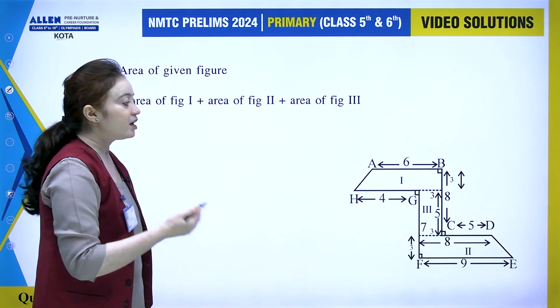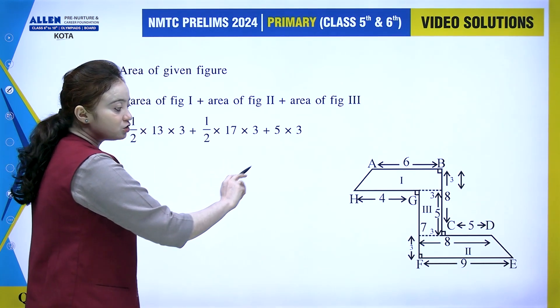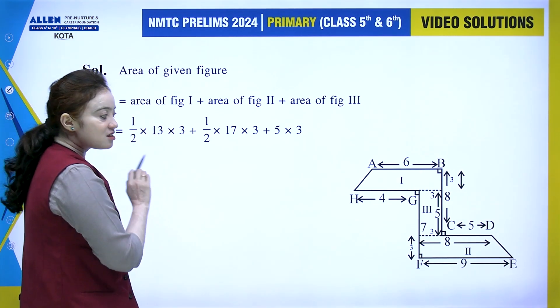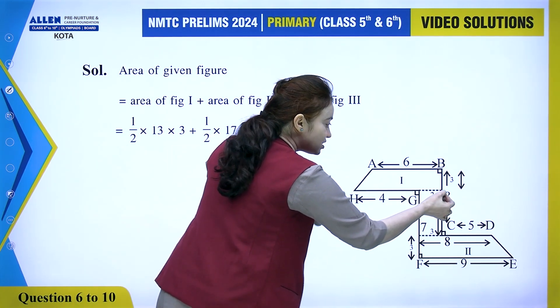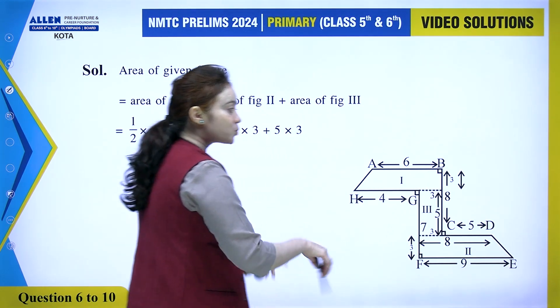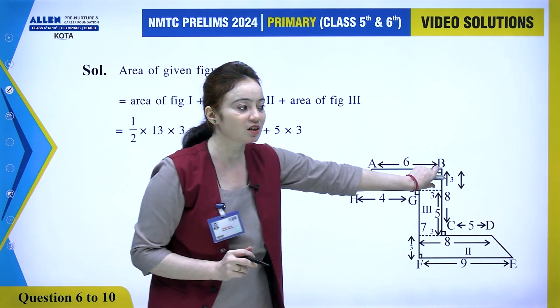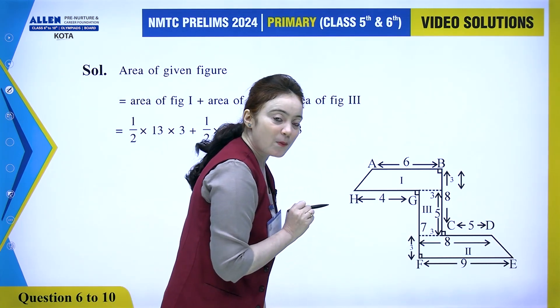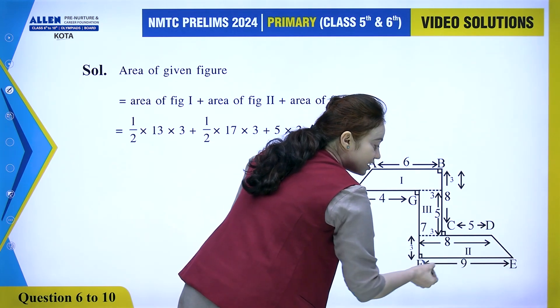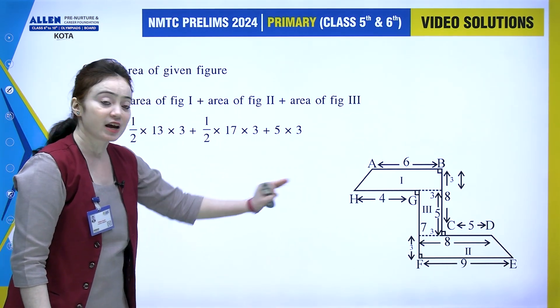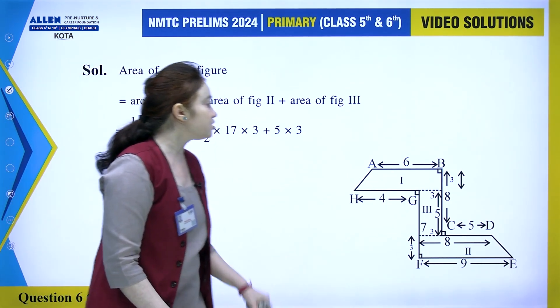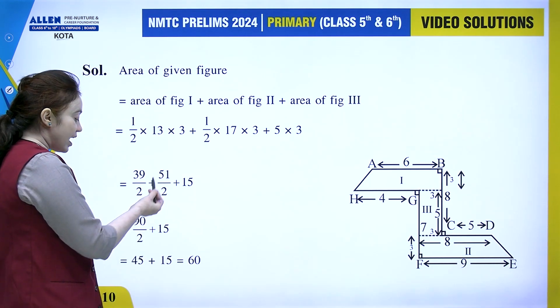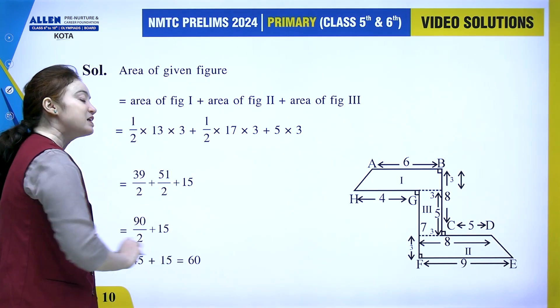Calculating the area is very easy. For the first and second parts which are trapeziums, the formula is half into sum of parallel sides into distance between them. For the first figure: half into (6 plus 7) into 3. For the second figure: half into (9 plus 8) into 3. The middle rectangle is 3 into 5. Adding these up: half into 13 into 3 is 39/2, half into 17 into 3 is 51/2, so total is 90/2 which is 45, plus the rectangle area of 15, giving total area of 60.